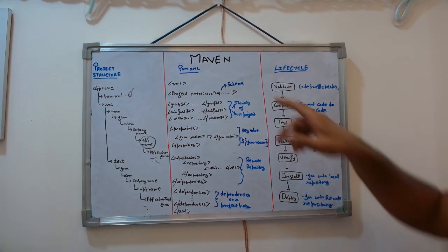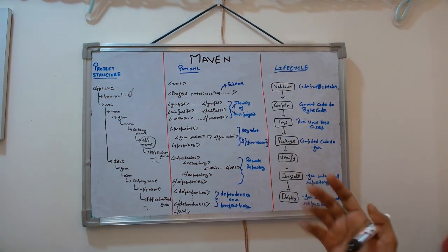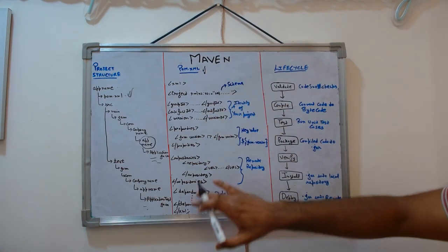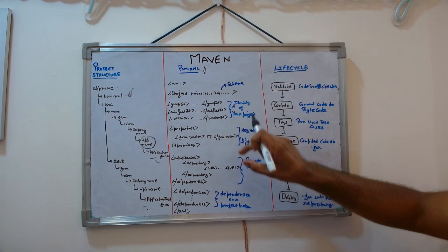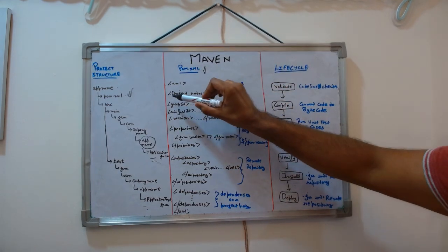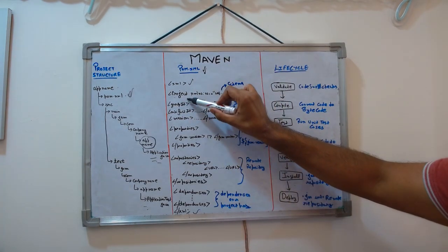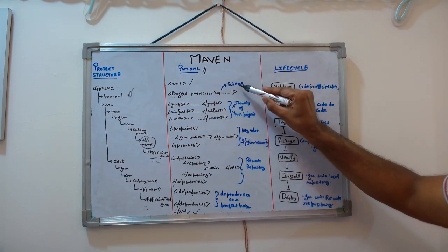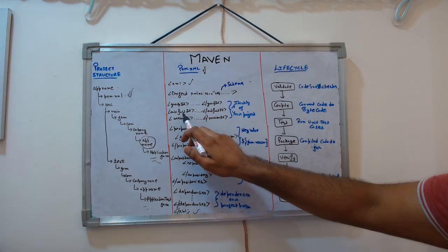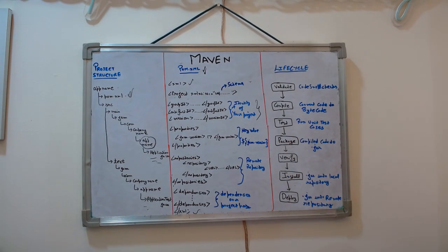The very important part here is pom.xml. Maven actually uses it to generate a build, resolve dependencies — everything. Without pom.xml, Maven is nothing. So what exactly does pom.xml contain? It's an XML file: it has an XML start and close tag, a project element, and we generally provide a schema version. Then we have groupId, artifactId, and version, which together form the identity of your project.